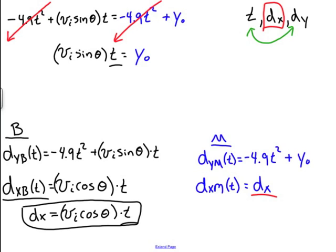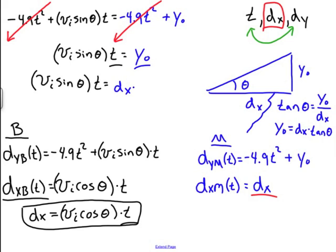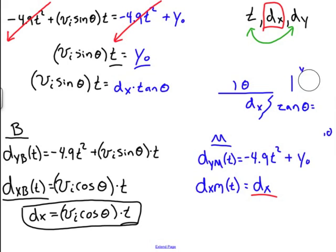And I want to go back up to the y direction. I want to manipulate this y naught. Let's get that thing out of there. Remember, I had a triangle that looked like this. This was theta, this was dx, and this was y naught. Well, I can write down an expression that says tangent of theta is equal to opposite over adjacent, which is y naught over dx. So really, y naught can be written as dx times tan theta. So that's how I'm going to write it over here. So vi sine theta times time is equal to dx times tan theta. And I'm going to clear a little bit more board space over here because we're about ready for our very last step.